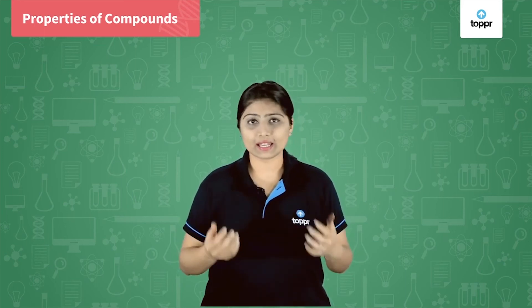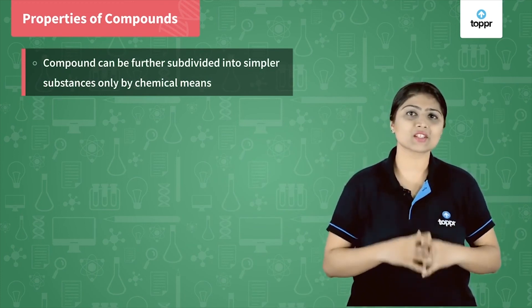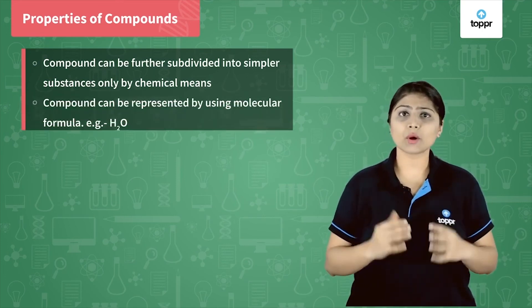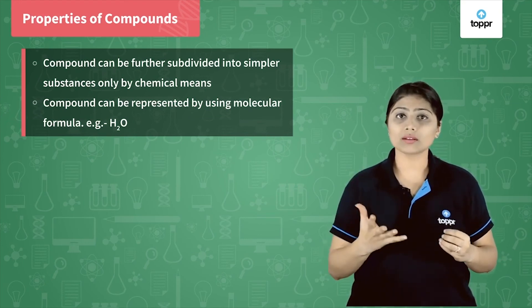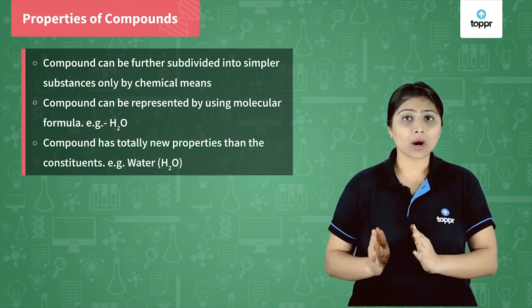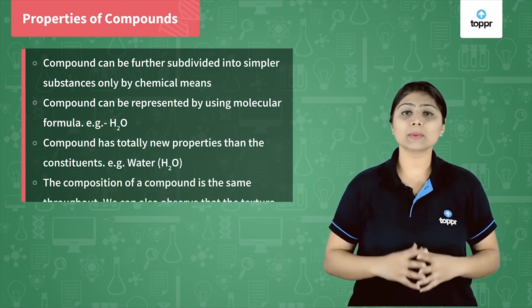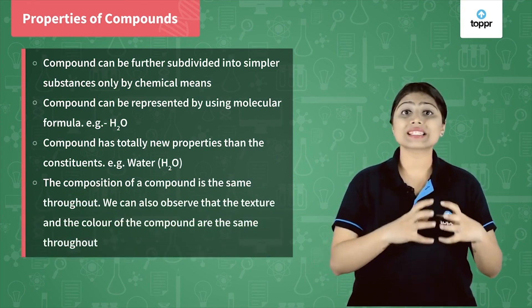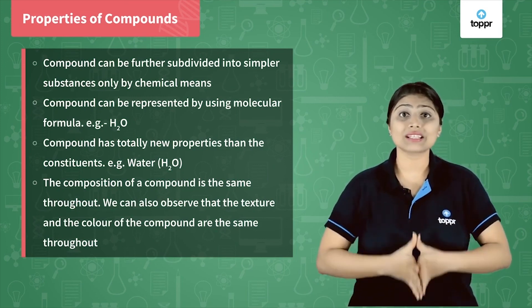Now let us move further and see the properties of a compound — we already know them, so let's quickly revise. First, a compound can be subdivided into simpler substances only by chemical means. Second, a compound is represented by its molecular formula; for example, water is represented by H2O. Third, a compound has totally new properties than its constituent elements — for example, water. Fourth, the composition of a compound is the same throughout — its texture and color are uniform throughout.